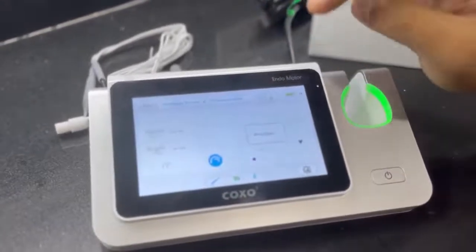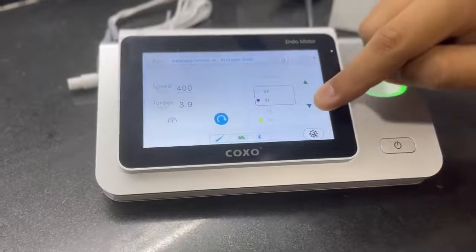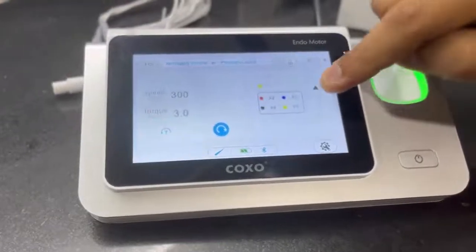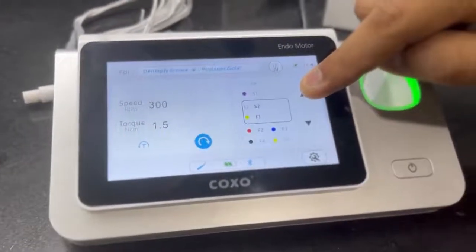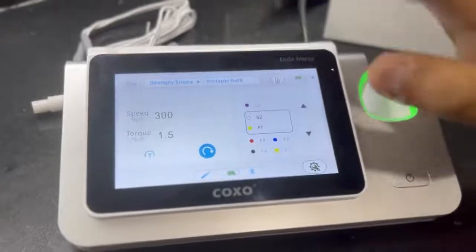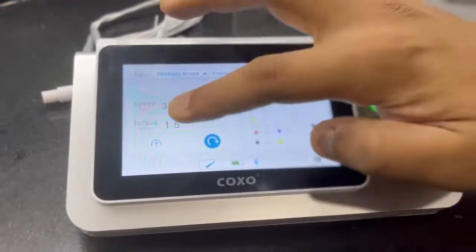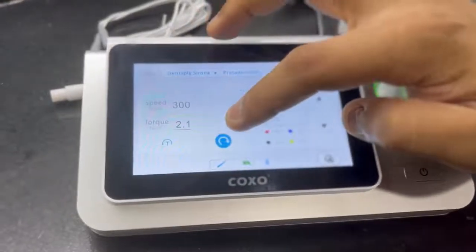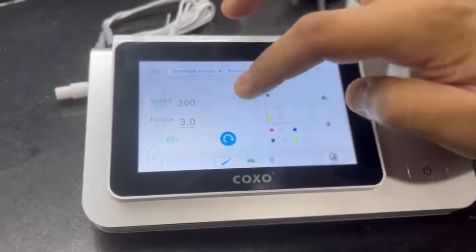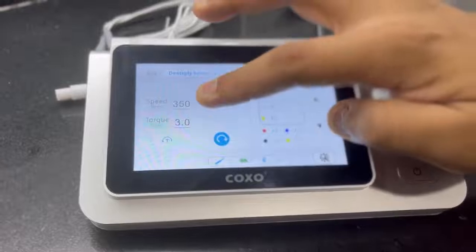So once I choose the file system, I choose the tick over here and you can see all the files that are pertaining to this particular file system are already displayed here along with their recommended speed and torque settings. Now if I need to change any of these, I can just add or subtract the value to increase or decrease the speed.